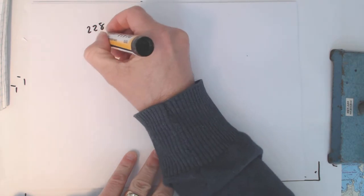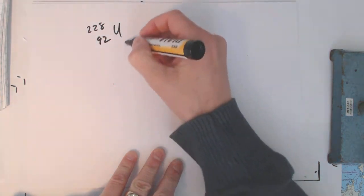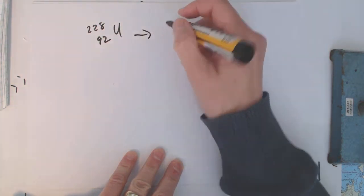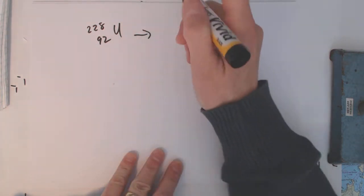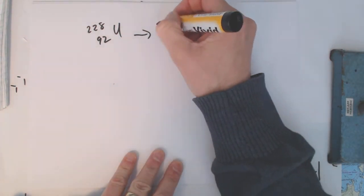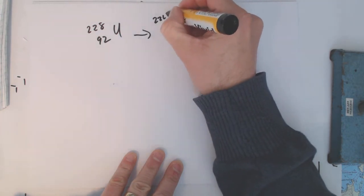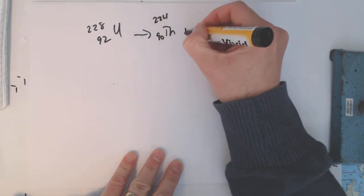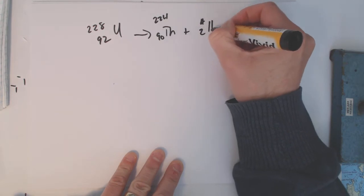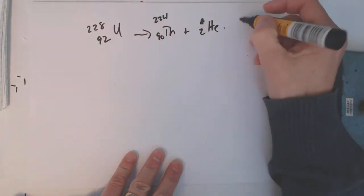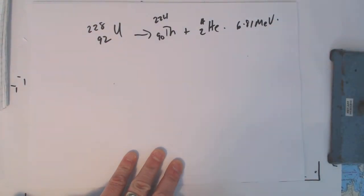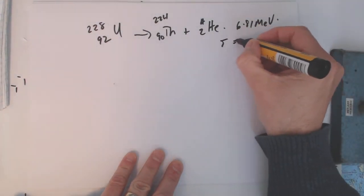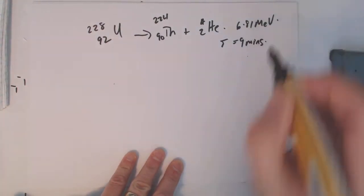Whereas, if we take a slightly different uranium, very different uranium, same atomic number, and again, it comes down to the thorium, seems to like going down to thorium, and thorium again is 90, but this time we've got an alpha particle again eliminated. But this time it puts out 6.81 mega electron volts. Nothing strange about that. But this one's half-life is 9 minutes. Very fast.